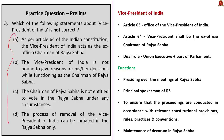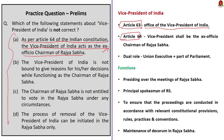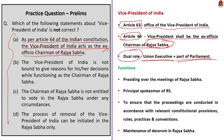Option A says that as per Article 64 of the Indian Constitution, the Vice President of India acts as the ex-officio Chairman of Rajya Sabha. This is correct. Article 63 provides for the office of Vice President, and Article 64 provides that the Vice President shall be the ex-officio Chairman of the Council of States, that is the Rajya Sabha. In the constitutional setup, the Vice President is part of the union executive but as Chairman of the Rajya Sabha also forms part of Parliament, giving him a dual capacity and two distinct offices.